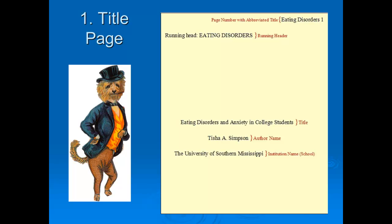The running head is actually instructions to the typesetter. If you look at a research journal publication, you'll notice that there is a short title running at the top of the pages of the journal article — this is called a running head or running header. So the running head is instructions for the typesetter. Of course, for you, your paper's not going to be typeset yet, so that's not really that important, but definitely the page number and the short title are important.